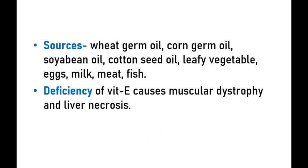Sources of Vitamin E include wheat germ oil, corn germ oil, soya bean oil, cotton seed oil, leafy vegetables, egg, milk, meat, and fish. Deficiency of Vitamin E causes muscular dystrophy — muscle weakness and decreased muscle mass. It also causes liver necrosis — where liver cells begin to die.